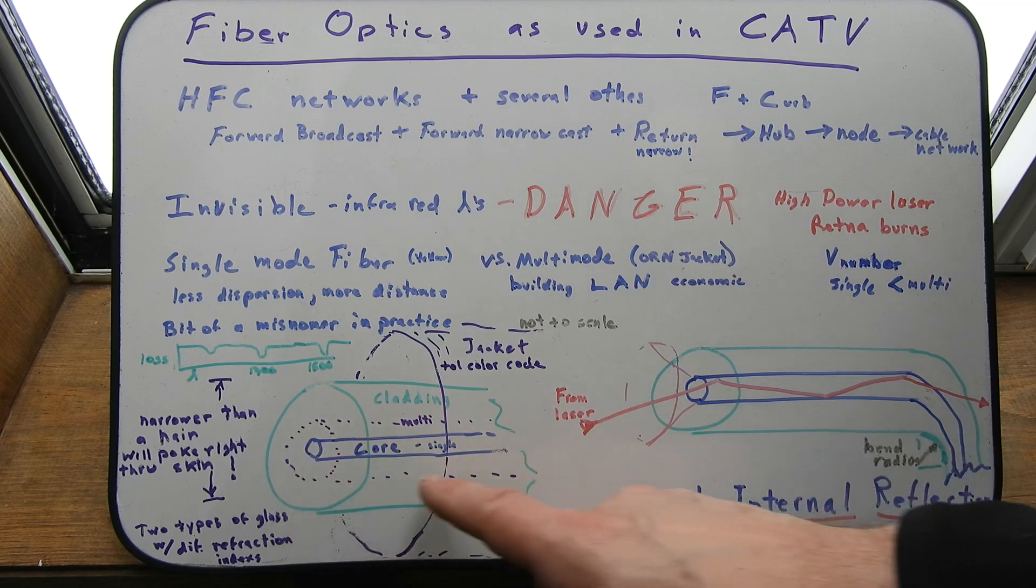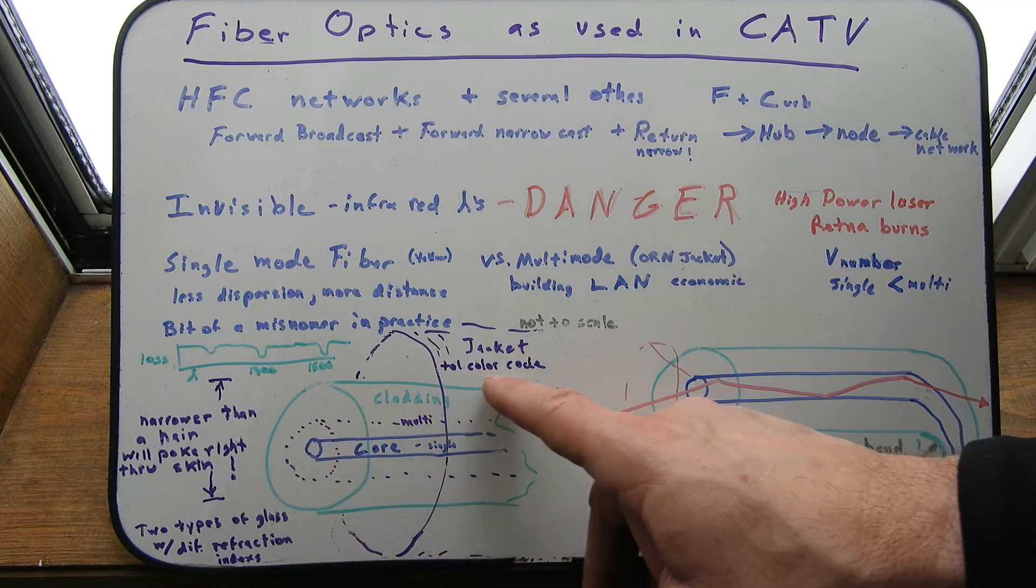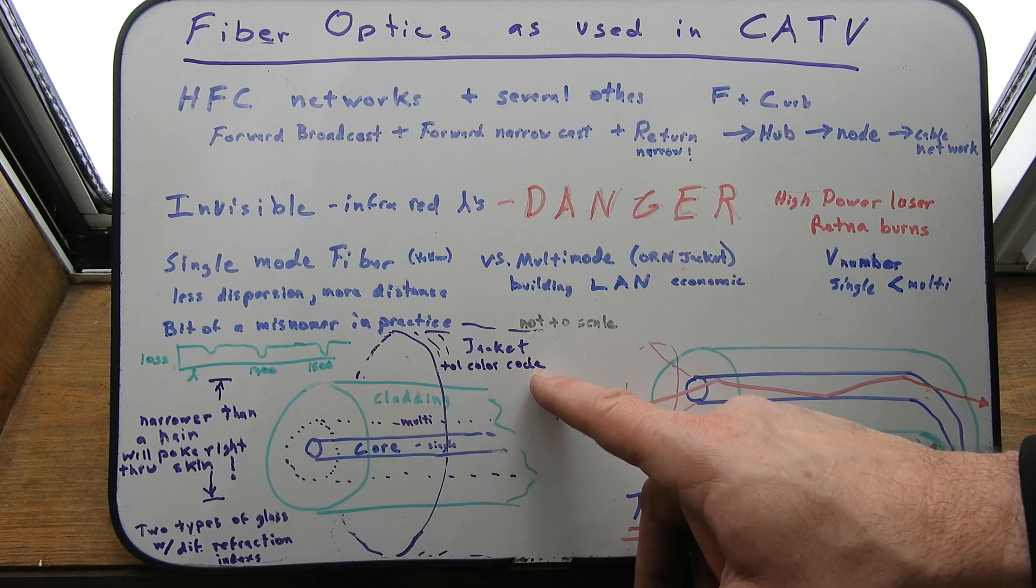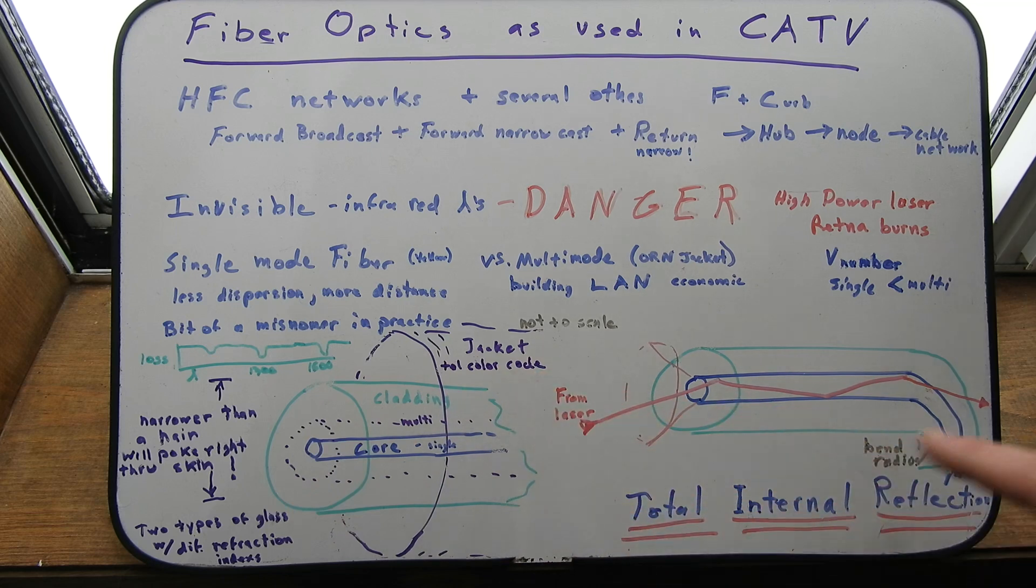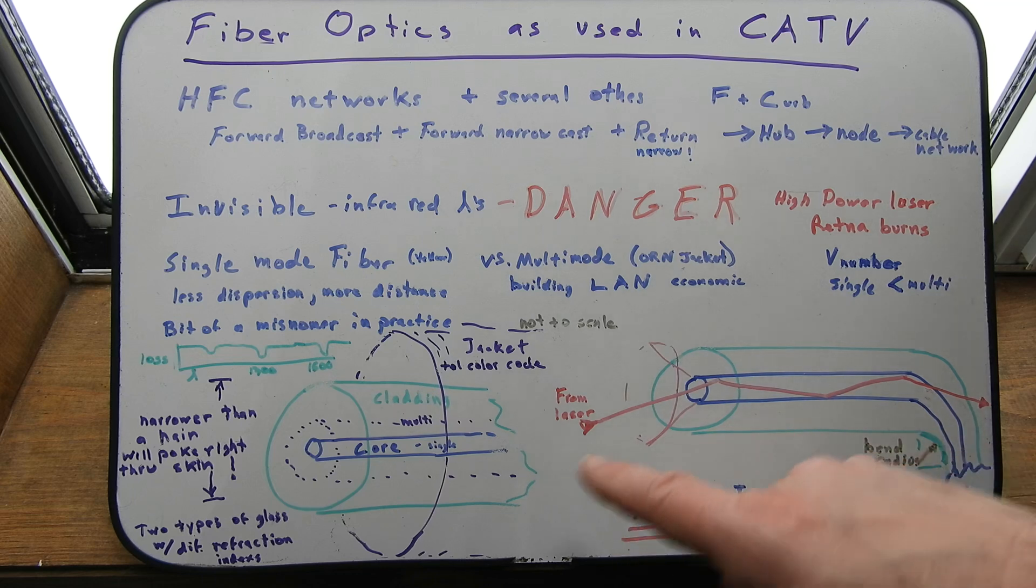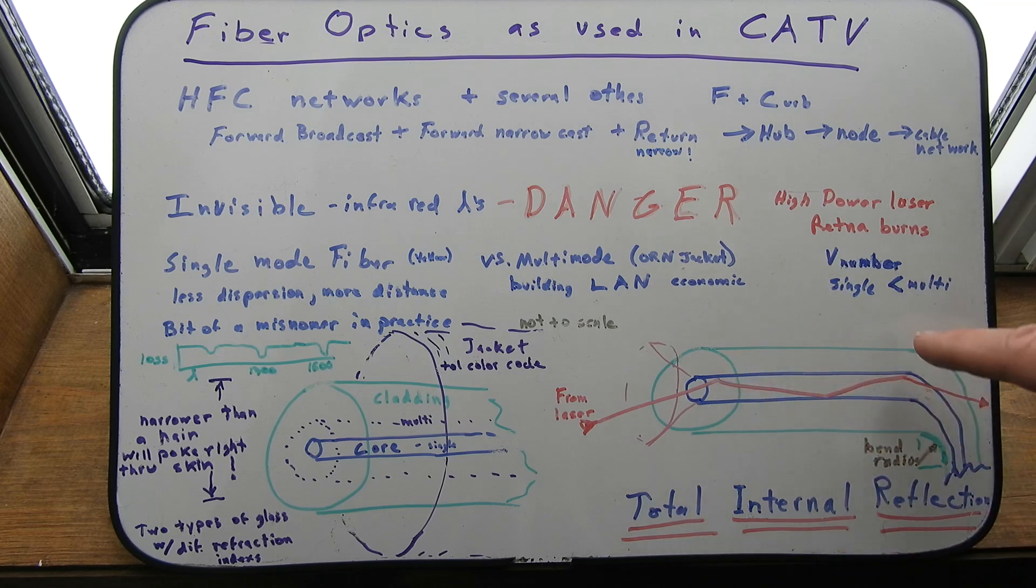Multimode would have a wider core. Jacket carries the color code. Light can go right through the jacket and through the cladding if it's bent too far. Total internal reflection is the main idea though. Light is totally, normally, totally reflected inside the fiber. It doesn't escape unless you bend the fiber too much. I'm going to try to get some outdoor shots of some installations of fiber.